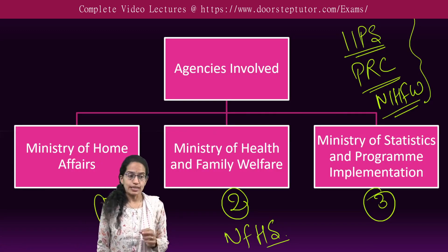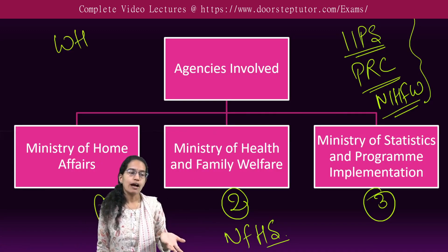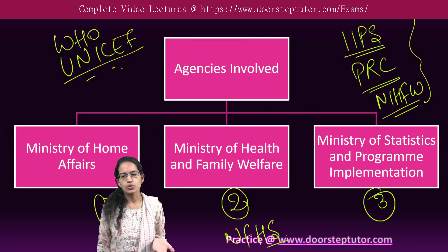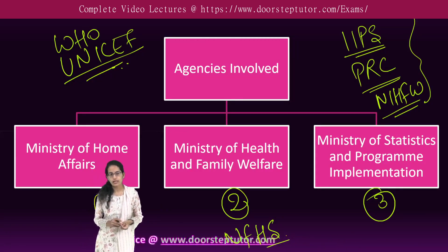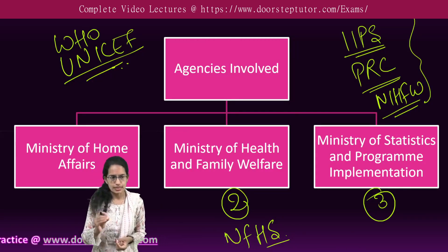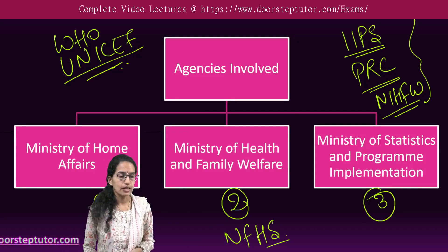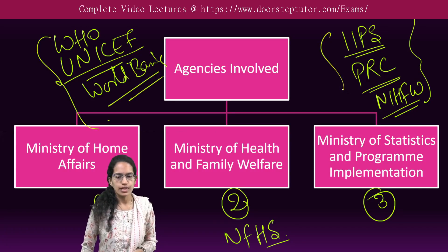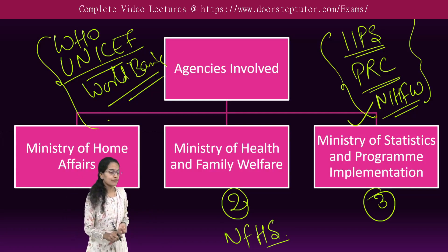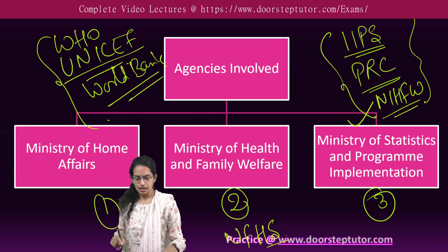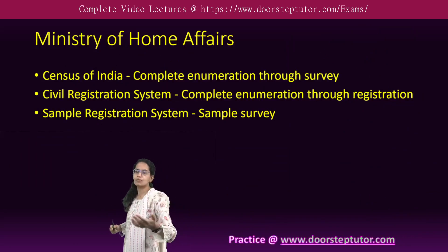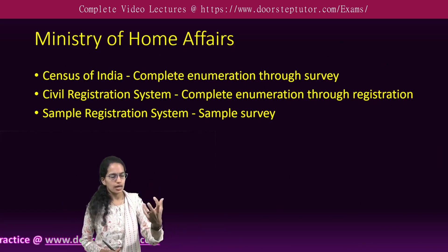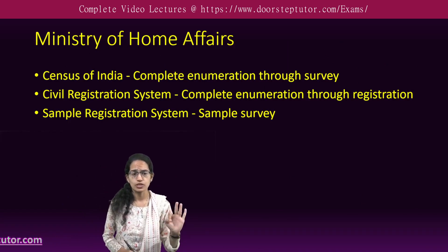At the global level, you have the World Health Organization, UNICEF (United Nations Children's Fund), and the World Bank — three important agencies at the international level. These agencies, along with national ones, work for collecting data. The main idea is to have people in the field, get the information collected, and have that information processed and absorbed.